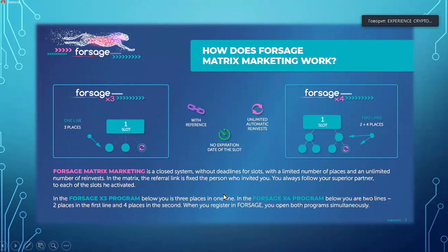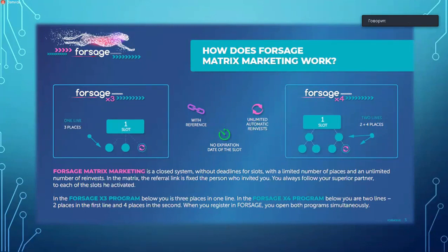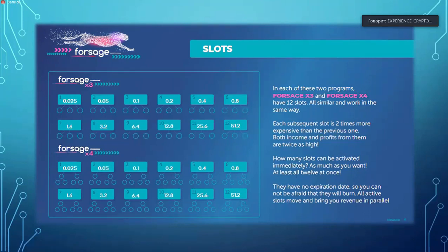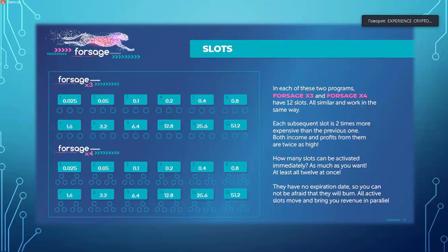The two programs work simultaneously generating income, and the money instantly goes into your Ethereum wallet — there is no manual withdrawal, which is a very attractive aspect of this program. There are 12 income slots on each of the two programs, giving you a total of 24 perpetual recycling income streams. As you progress through them they continually work, and if you reach income slot 12 on each program you're effectively running 24 income streams.